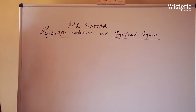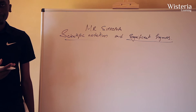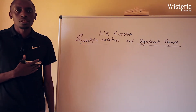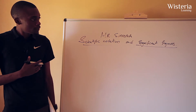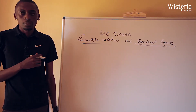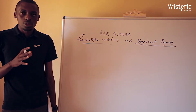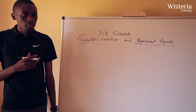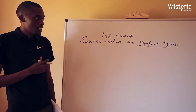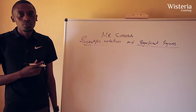We are going to look at scientific notation and significant figures in physics. You would agree that we have numbers that are very large and numbers that are very small in quantity. In physics we can be dealing with large numbers or very small numbers, and as such we have what we call scientific notation and significant figures.